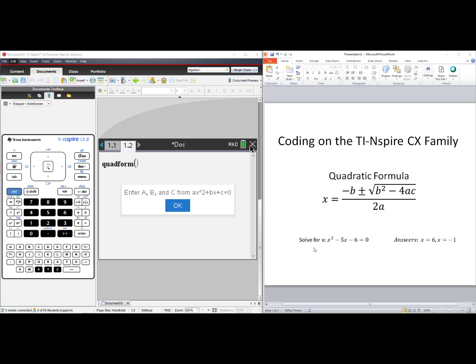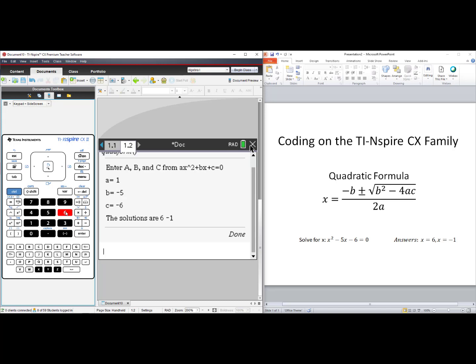We'll need an example problem. Solve for x: x² minus 5x minus 6 equals 0. The solutions are x equals 6 and x equals negative 1. Press Enter. Put in our A value, which would be 1. Enter. Negative 5. Enter. Negative 6. Enter. The solutions are 6, negative 1.